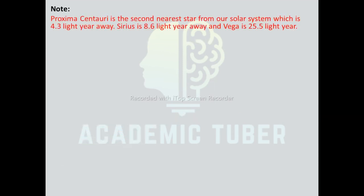Proxima Centauri is the second nearest star from our solar system, which is 4.3 light years away. Sirius is 8.6 light years away and is the brightest star. Vega is 25.5 light years away.